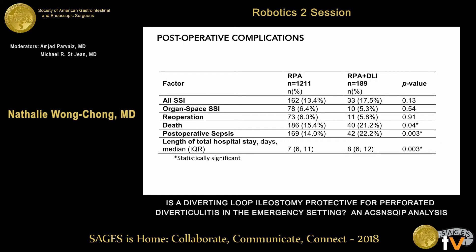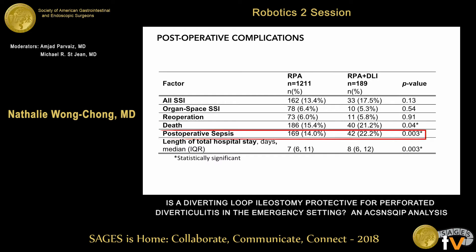When we looked at the rate of postoperative complications, there was no difference in the total number of SSI or in the development of organ space SSI or re-operation. The 30-day mortality rate was higher in the group with a diverting loop ileostomy, but on a subgroup analysis where we looked at just patients with dirty wounds and excluded contaminated wounds, this was no longer significant. The group with a diverting ileostomy did have more postoperative sepsis and a longer length of stay.